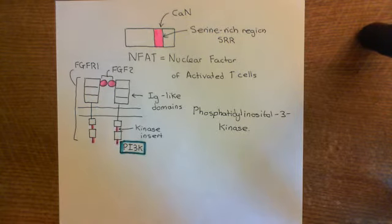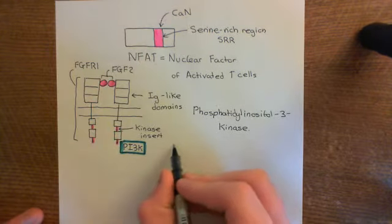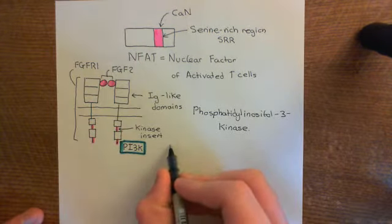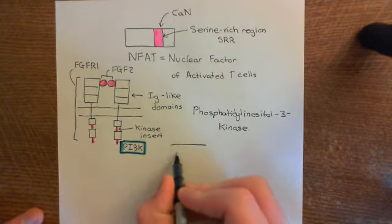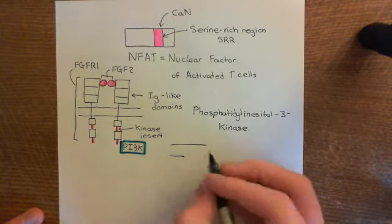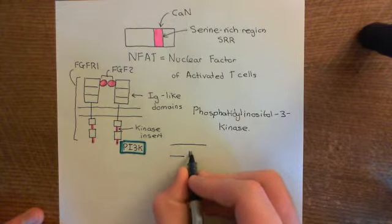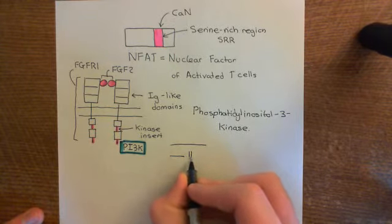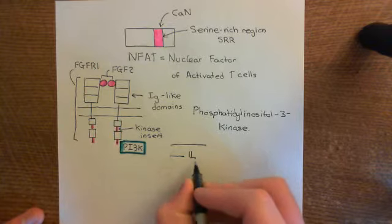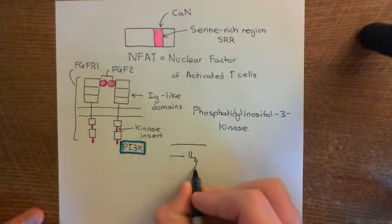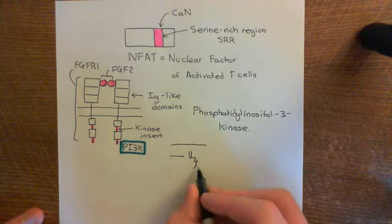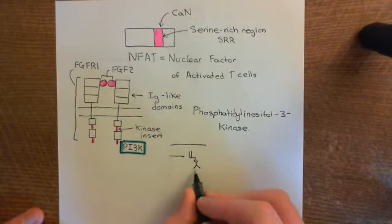So what's PI3 kinase going to do once it's at the plasma membrane? It's going to work on PIP2, but it's going to do a different thing to it compared to phospholipase C-gamma. So let's draw out our molecule of PIP2 again — phosphatidylinositol-4,5-bisphosphate.